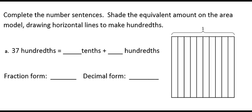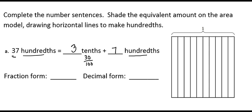The next problem says to complete the number sentences and shade the equivalent amount on the area model, drawing horizontal lines to make hundredths. This number is 37 hundredths. Well, 37 hundredths is the same thing as 3 tenths and 7 hundredths, because 3 tenths is also the same thing as 30 hundredths — that's how we get our 37 hundredths. Now let's shade in 3 tenths and 7 hundredths on this area model. I'll shade in the first 3 tenths, but in order to show 7 hundredths, I need to divide one of the tenths into 10 equal pieces. Each of those pieces will be a hundredth, and I'll shade in 7 of those. I'll divide this tenth into 10 pieces, then shade in my 3 tenths and my 7 hundredths.